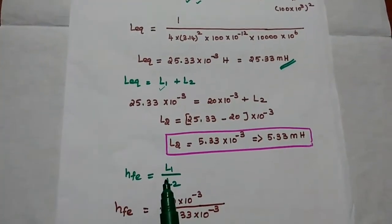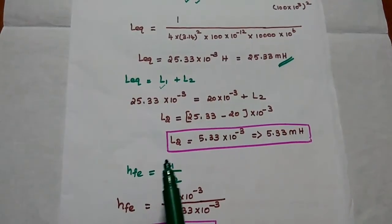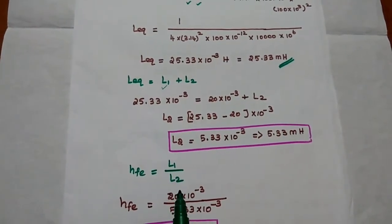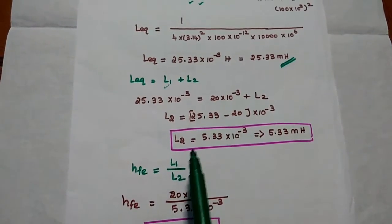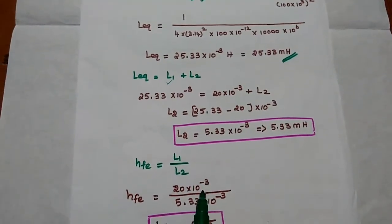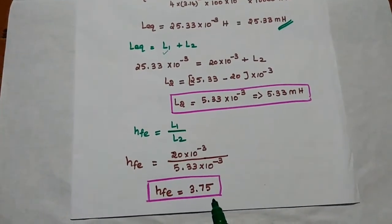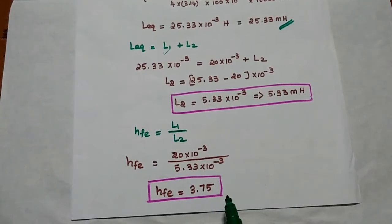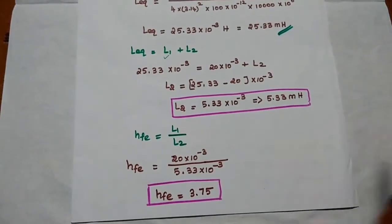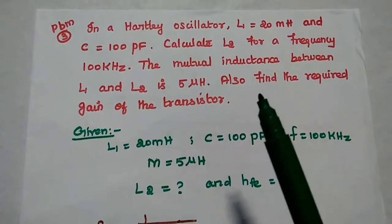The gain of the amplifier H_FE is equal to the ratio of L1 to L2. Substituting the known values of L1 and L2, we get the gain value as 3.75. This is the gain of the amplifier.